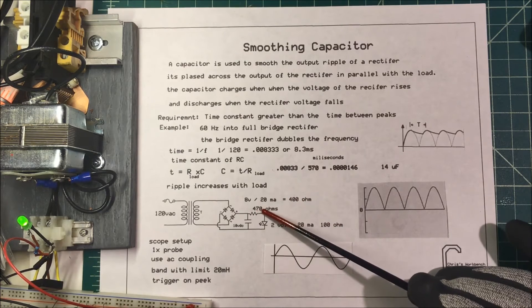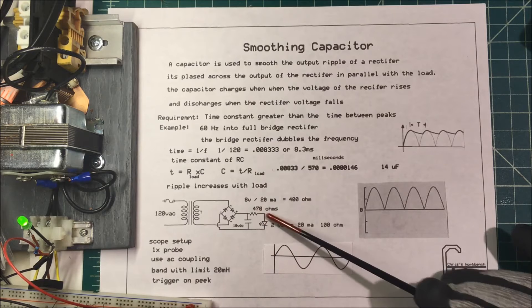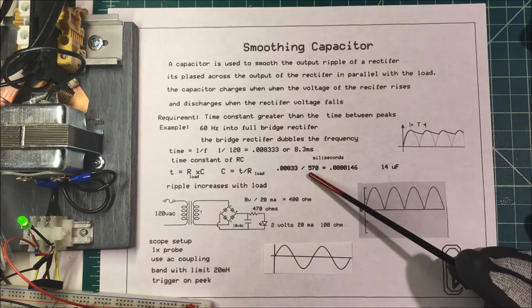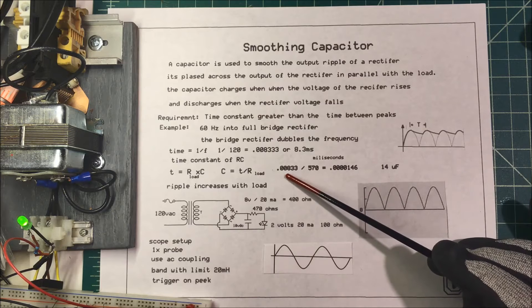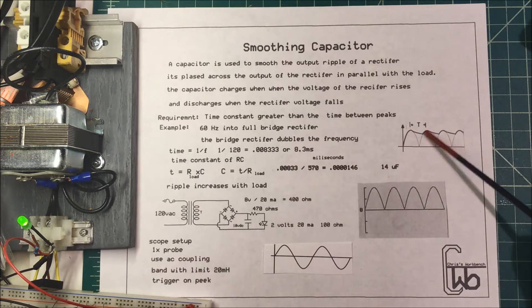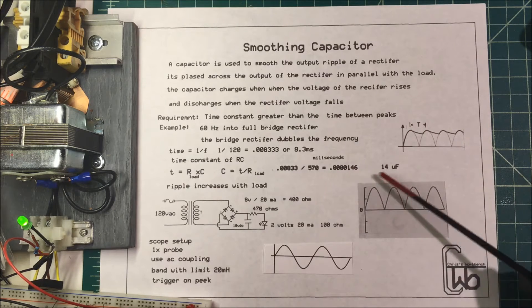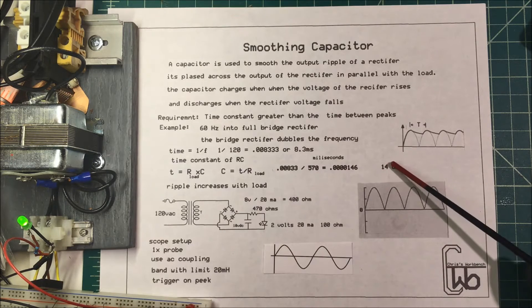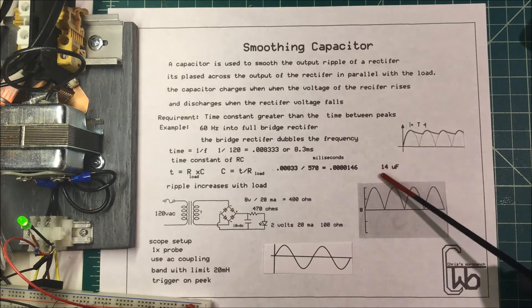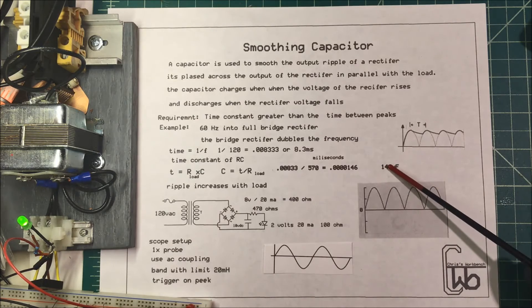I have a 470 ohm resistor so I use that, which comes out to 570 ohms. I divide that into my time between the two peaks and that comes out to 14 microfarads. That's the minimum amount of capacitance I need, probably have to double or triple that.